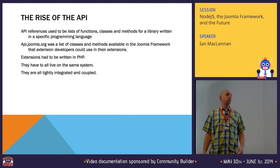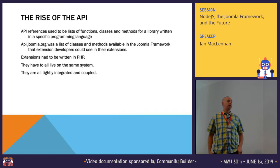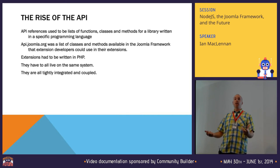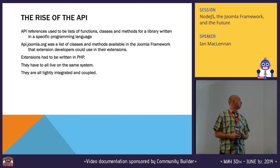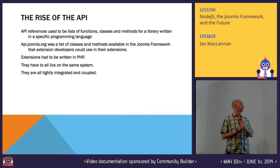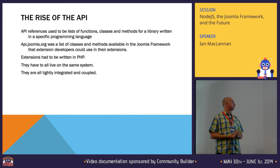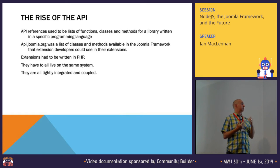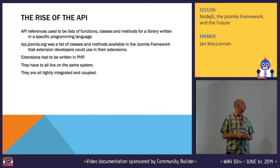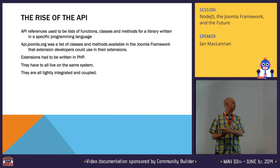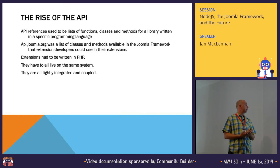In recent years, we have seen the rise of the API. If you think back to api.joomla.org — when it first kind of was born, it was a list of functions, classes, and methods for a library written in a specific programming language. So API meant Joomla framework classes that developers could use in their extensions. Those extensions had to be written in PHP, they all had to live on the same system, and they were all tightly integrated and coupled.